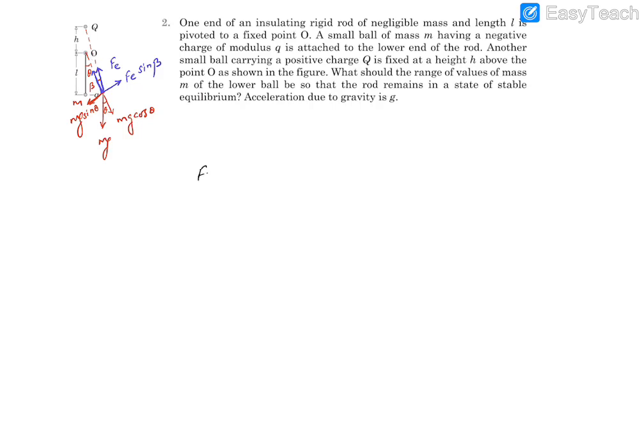So for stable equilibrium, what is required is Mg sin theta should be greater than electrostatic force sin beta. Now when we do this kind of disturbance with theta, theta is considered small, so theta and beta are small. Whenever there is a small angle, we know the small angle approximation, so sin theta can be written as theta. This becomes Mg theta should be greater than FE beta. Now we can put the value of FE if required.